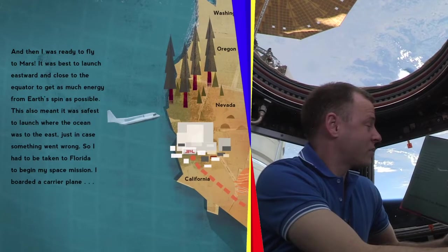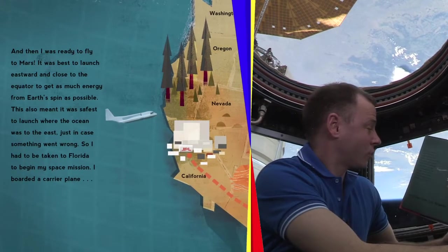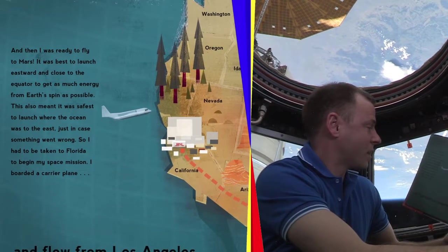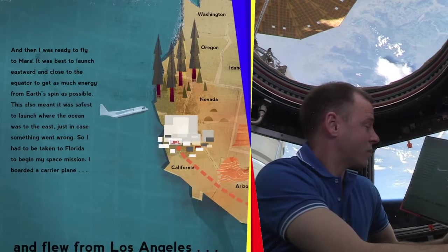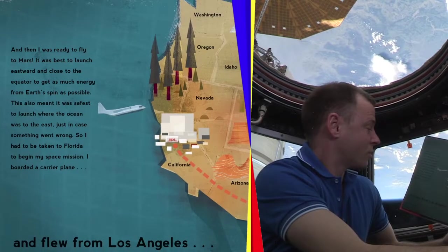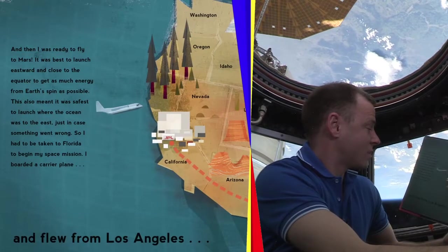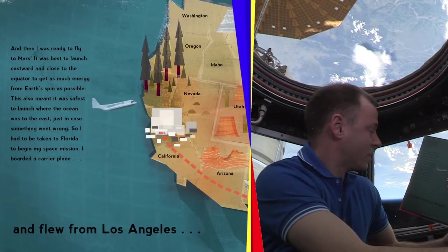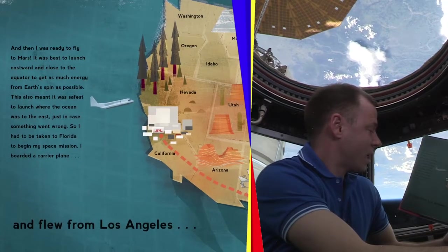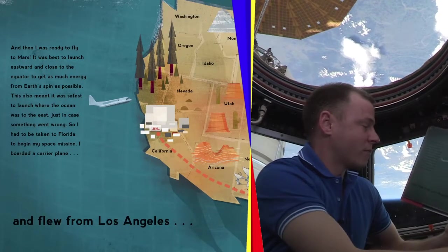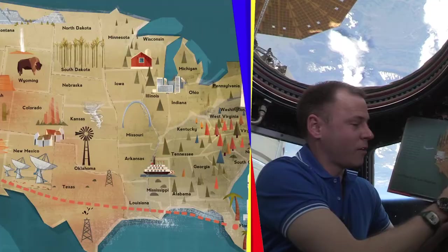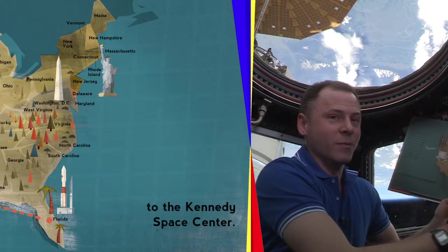It was best to launch eastward and close to the equator to get as much energy from the Earth's spin as possible. This also meant it was safest to launch where the ocean was to the east, just in case something went wrong. So I had to be taken to Florida to begin my space mission. I boarded a carrier plane and flew from Los Angeles all the way to the Kennedy Space Center.